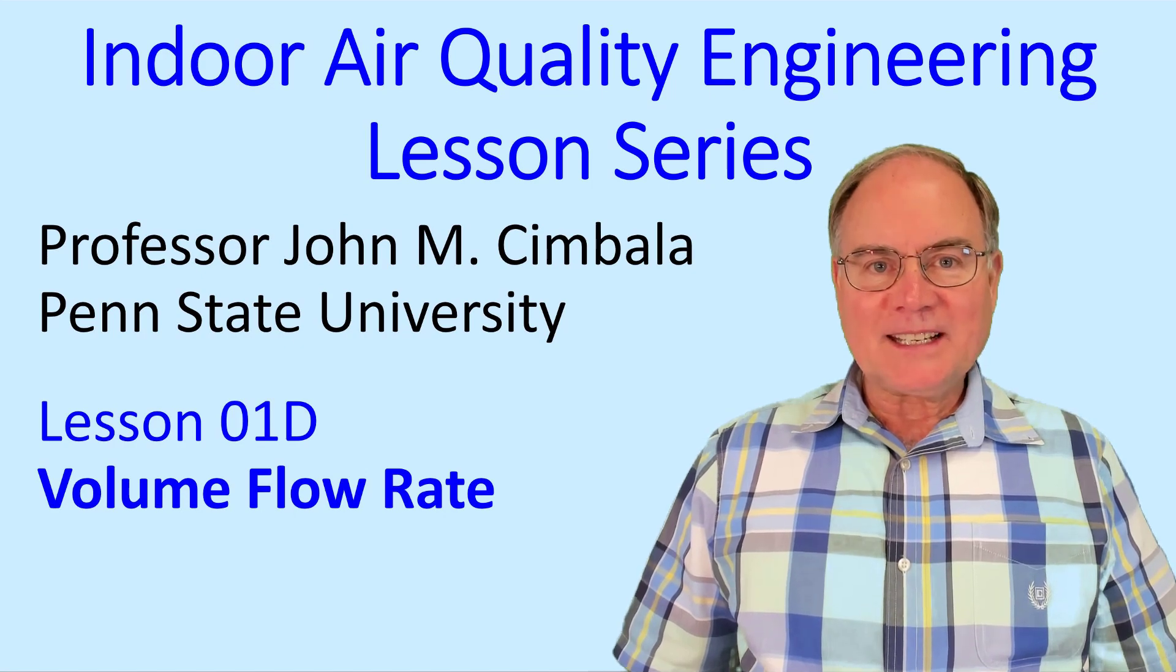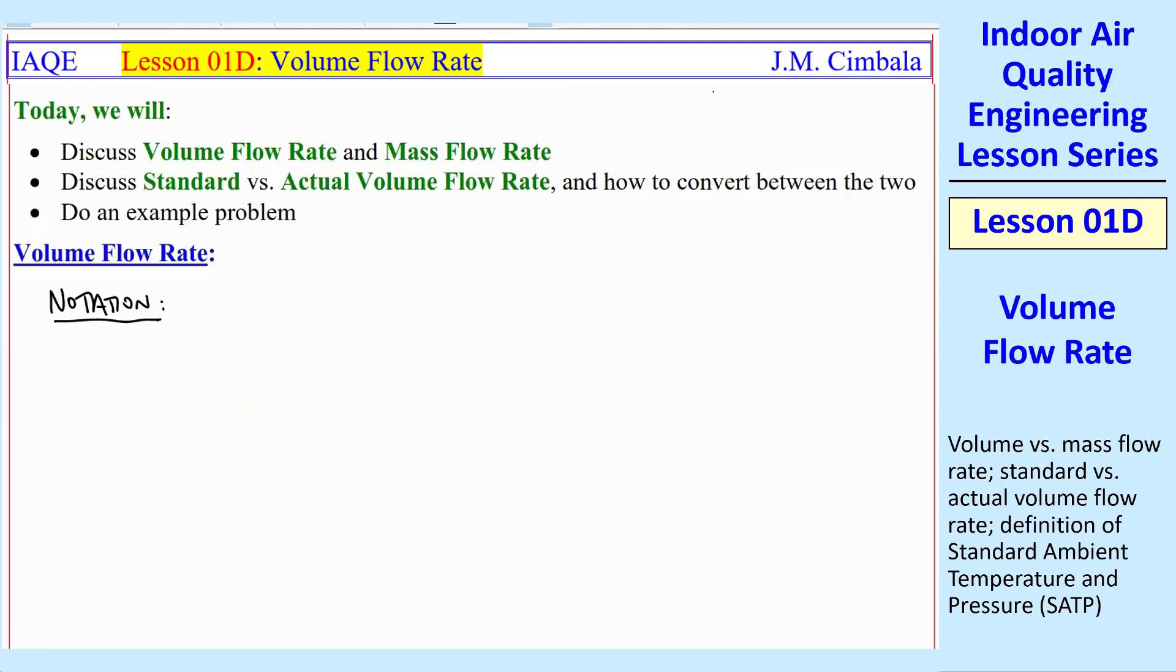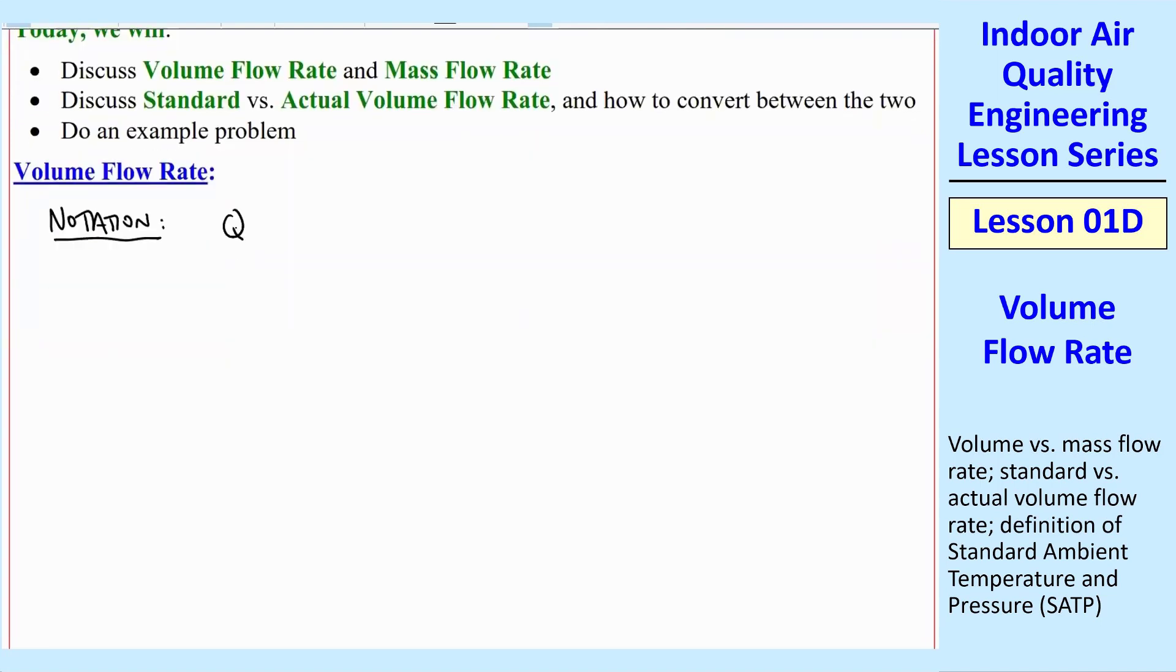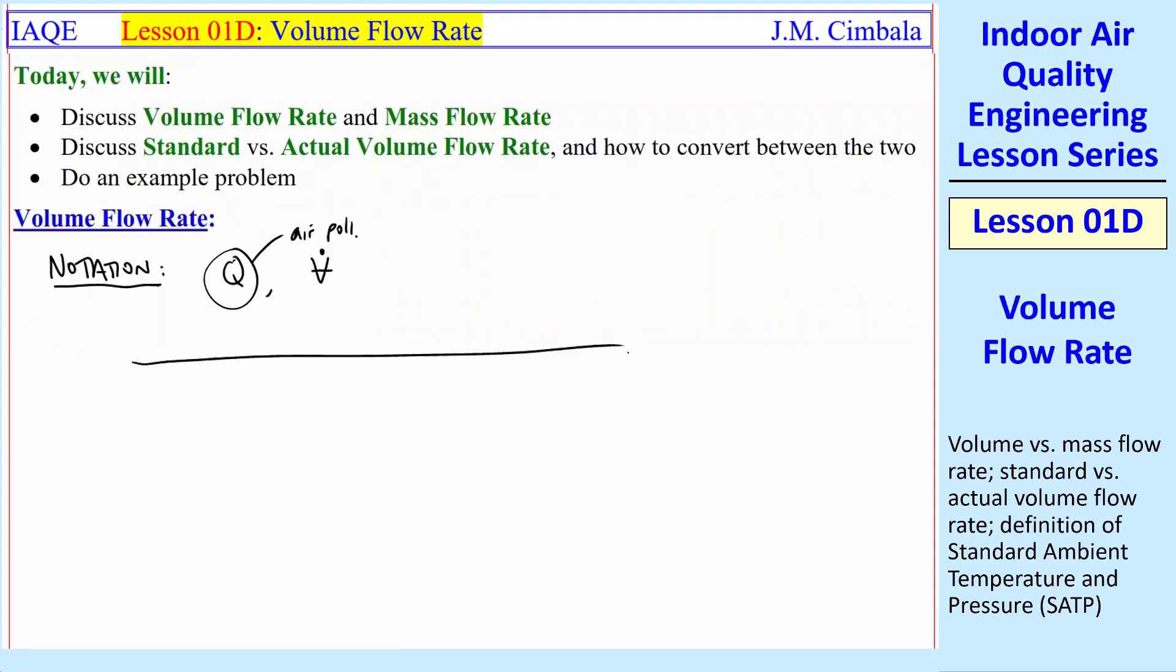Welcome to Lesson 1D, Volume Flow Rate. Let me start with some notation. We're going to use Q as the volume flow rate, and I'm sure if you've taken fluids, you've seen this other convention, which is V dot, V volume, and dot, meaning volume flow rate. That one makes more sense. That's the one I use in my fluids book. But we're going to use Q because that's more popular for air pollution. People that study air pollution use Q, so we will use Q for this course.